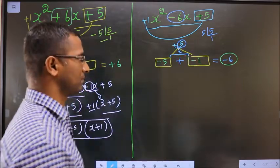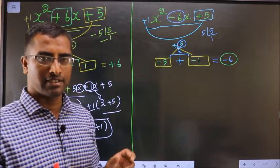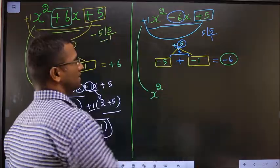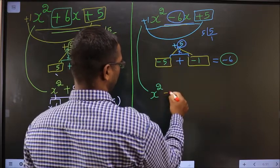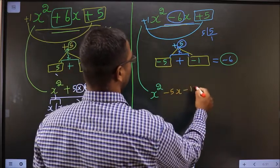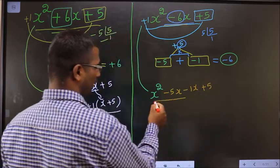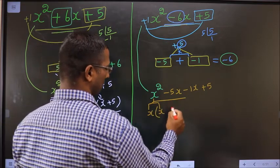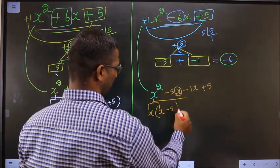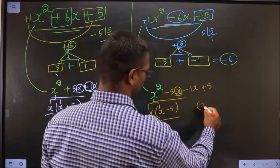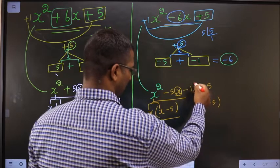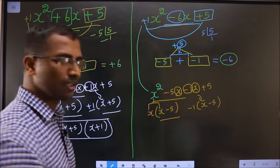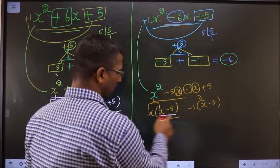The signs are adjusted. This will change to x squared minus 5x minus 1x plus 5. From the first two terms, x is taken common: x squared and x leaves x, and the remaining gives minus 5, so you get x minus 5. So here also it should be x minus 5. This x goes inside, so outside is x minus 1.